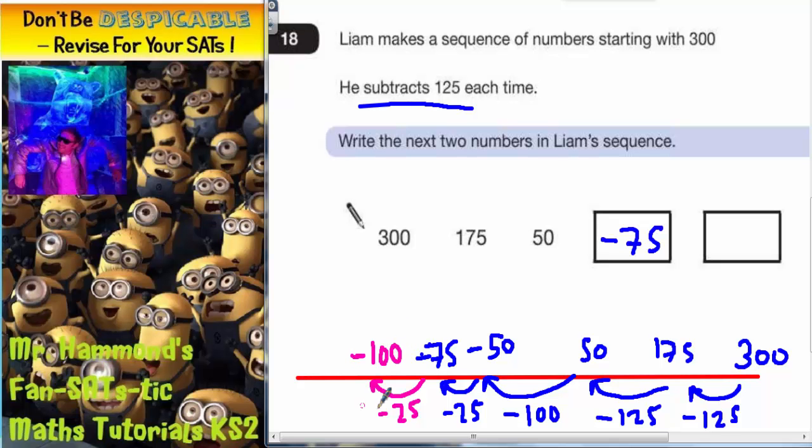So if you start on negative 75 and count backwards another 25, you're going to get to negative 100. But that's only 25 taken away. I need to take away 125, so I need to take away another 100. So if we're on negative 100 and I take away another 100, that's going to get me to negative 200. And this is the final answer in the box, negative 200.